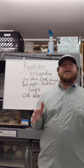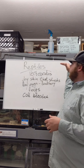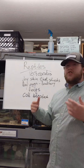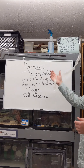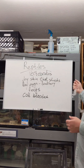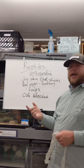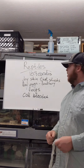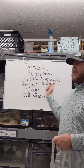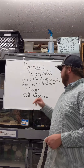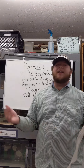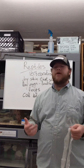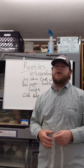As a review, reptiles are vertebrates, meaning they have backbones. They have dry skin that they shed — as seen with snake skins and scoots. They lay leathery eggs. They breathe with lungs. And they are cold-blooded, meaning they cannot regulate their body temperature. Now I'm going to grab a couple of friends and show you some examples of what we're talking about.